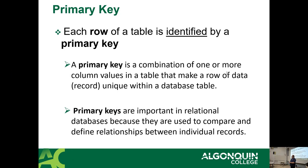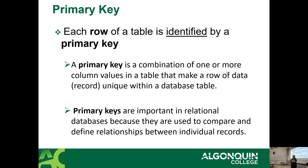We're going to pick up right where we left off last week, where I was talking about keys in general, and I had to hit the point of talking about primary keys. A primary key is a way to uniquely identify a row of data. In school here, your student number is your primary key — that one number identifies you to the school and all your attributes tied to one identifier.